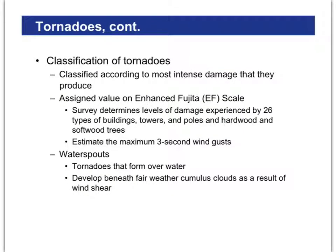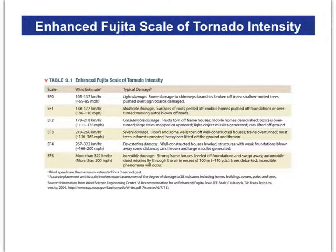Tornadoes are classified according to their power. It used to be called the Fujita scale, named for Japanese scientist Ted Fujita, but now it's called the Enhanced Fujita scale — the EF scale. So instead of F1, F2, F3, it's now EF1, EF2, EF3. Fujita spent much of his life creating models of small houses and using a tornado machine to destroy them, and the scale was based on how much damage takes place. The scale runs from EF0 through EF5 — six stages total. Depending on what kind of damage you observe, that determines how high the winds must have been and what EF rating the tornado would be assigned.